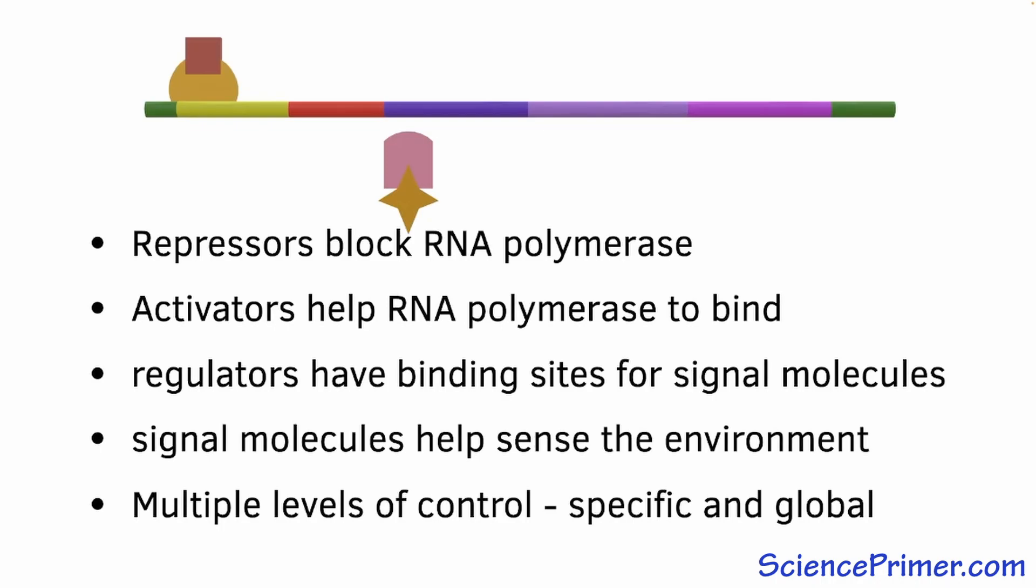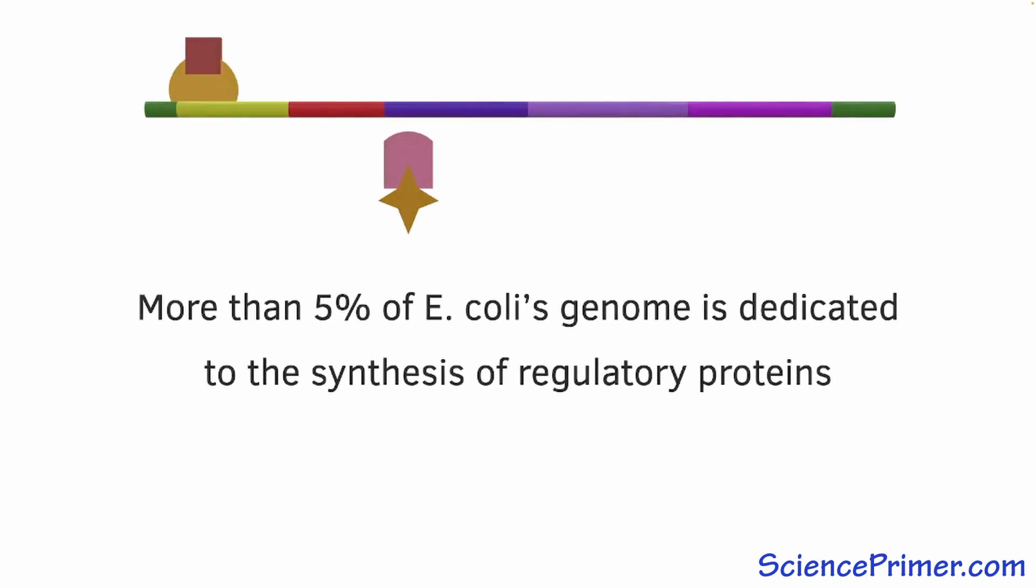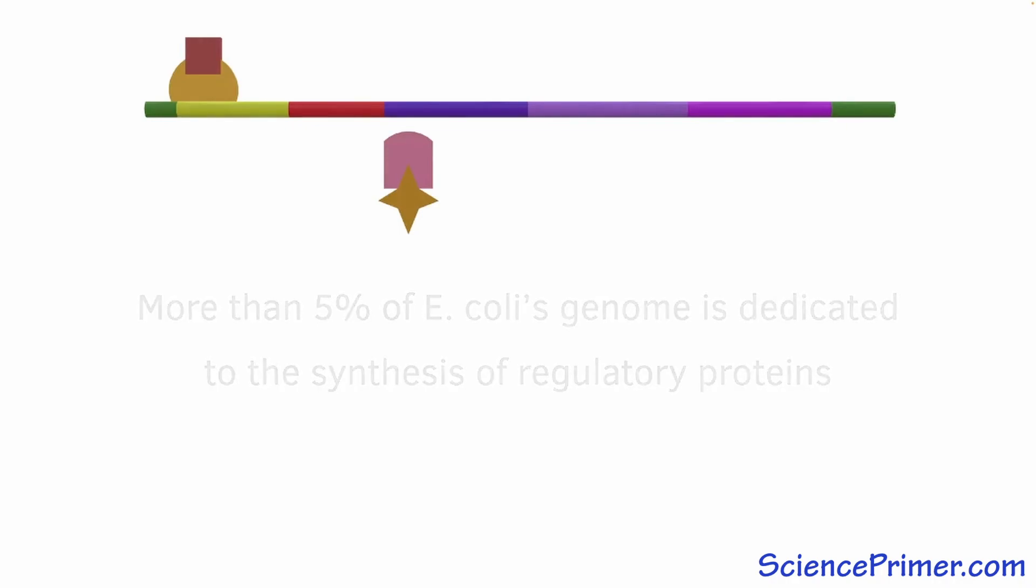Many different regulatory pathways have been characterized in E. coli and other prokaryotes. In fact, it is estimated that more than 5% of E. coli's genome is dedicated to the synthesis of regulatory proteins. This huge variety of activators, repressors, cofactors, and signal molecules allow prokaryotes to efficiently regulate gene expression by controlling the production of mRNA transcripts in response to changing conditions within and around the cell.